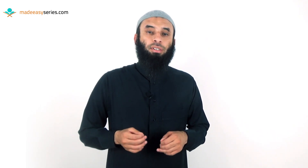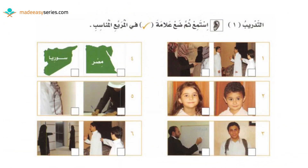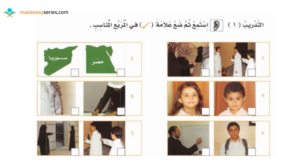Now let's open our books to page number eight. We have on top of the page التدريب الأول, the first exercise. It says استمع which means listen, ثم then, ضع means put, علامة means the sign — the tick sign — علامة الصح في المربع المناسب, in the appropriate box. We have six questions, and beside each question there are two options, one on the right and one on the left. We're going to listen to an audio and hear one word for each question.